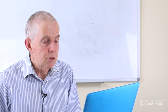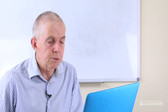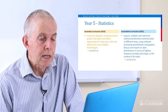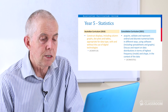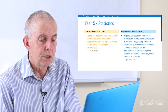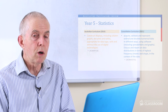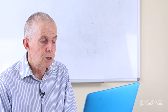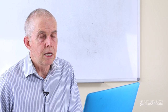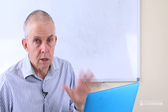Almost at the end — we're down to the last three content descriptors, all in statistics, and they're all long in terms of language. There's a lot more detail than there used to be, and they're almost all in blue, so it's all new language. We have: acquire, validate, and represent ordinal and discrete numerical data in different ways using software, including spreadsheets and graphs. Discuss and report on data distributions in terms of highest frequency and shape, mode and shape in the context of the data. It's well written — I suspect whoever wrote these content descriptors for statistics may have also written the content descriptors for Year 5 generally. They're very well written, clear, easy to understand, appropriate mathematical terminology. Whoever you are — congratulations, you did a great job.